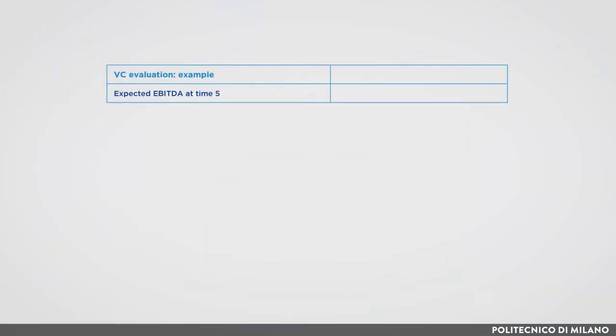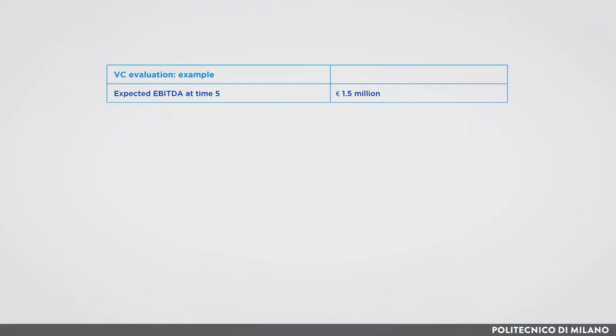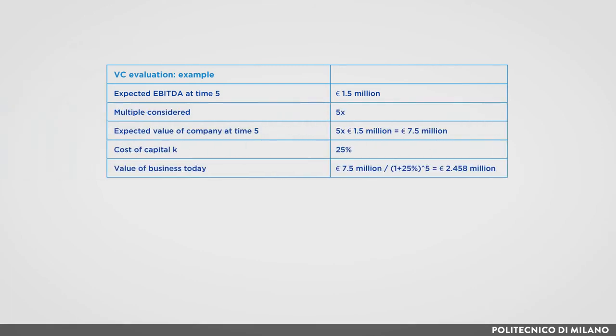Assume we have to evaluate a startup company. From the expectations in the business plan, we know that at time 5 the company could deliver an EBITDA equal to 1.5 million euro. Obviously, we cannot be sure of this and it carries significant risk. We apply a multiple obtained from comparable companies and transactions — for example equal to 5 — and therefore evaluate the startup at time 5 at 7.5 million euro. In order to obtain the value at time zero, we discount with an appropriate cost of capital, say 25%. The value today of the startup is about 2.5 million euro, as shown in the picture.